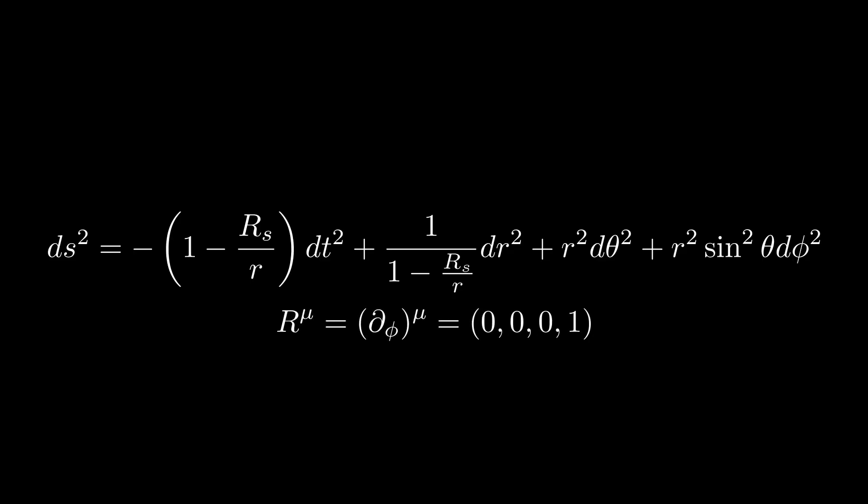Our metric is also independent of the coordinate t. That is, if we wait some time, our line element will be the same. This gives our second killing vector, which is just the time basis vector. I said earlier that each killing vector corresponds to a conserved quantity. The phi killing vector gives conservation of angular momentum, and the time killing vector gives conservation of energy.